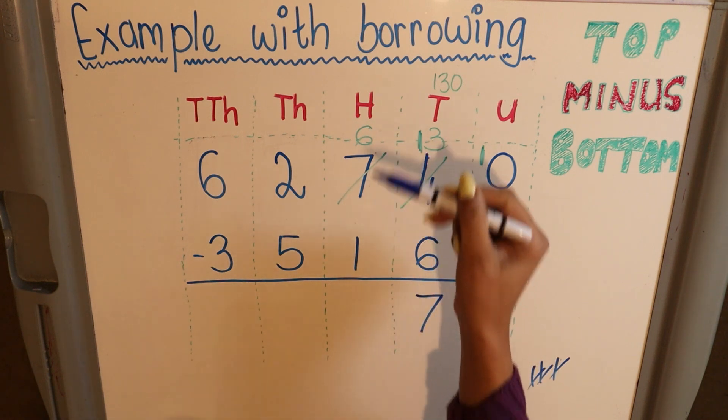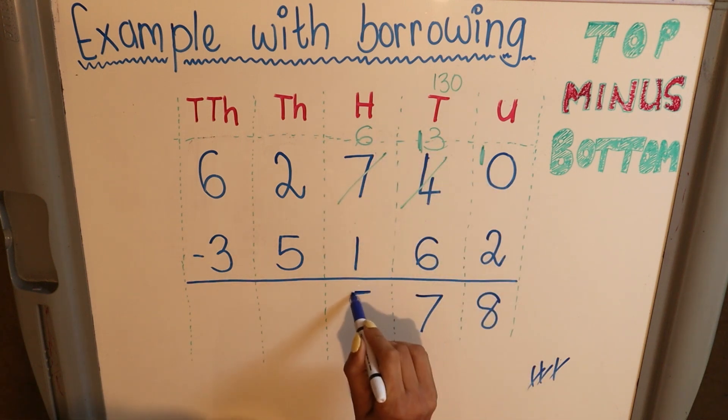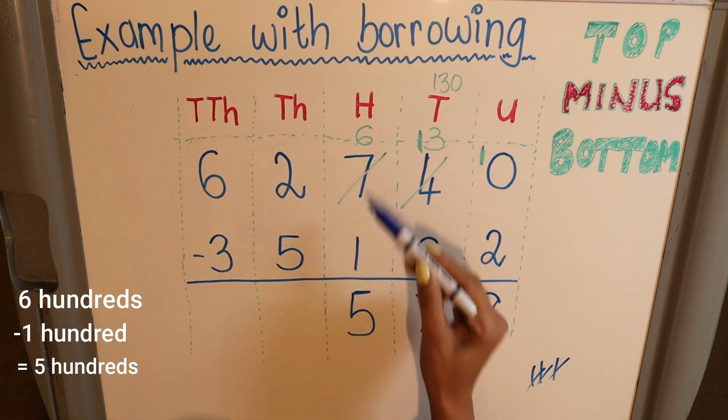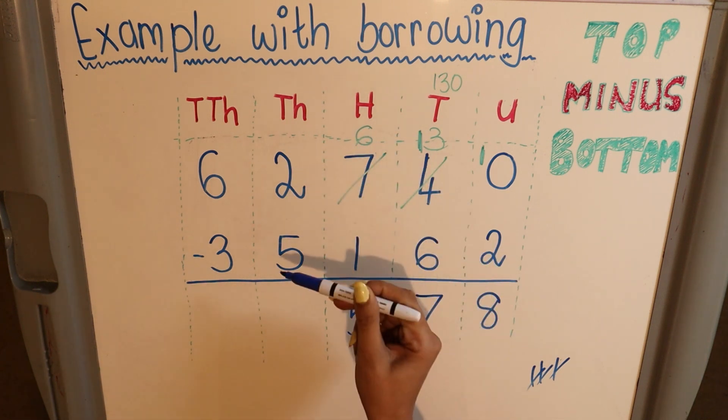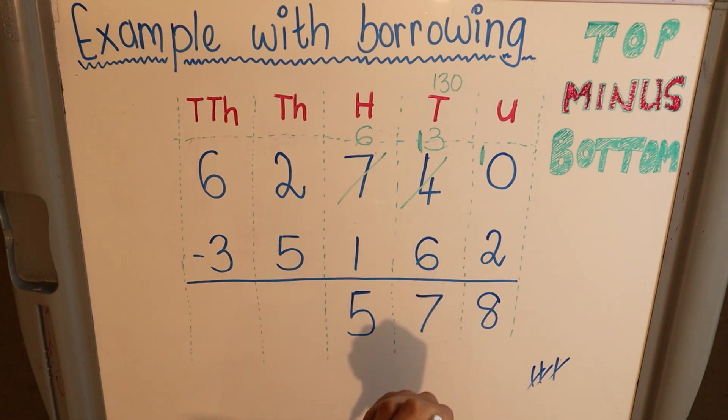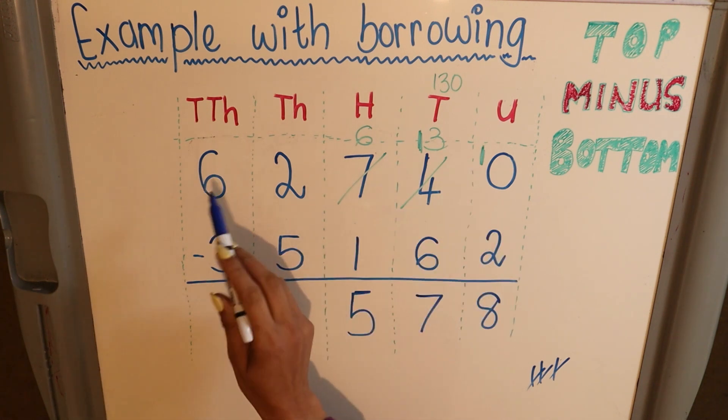Again, top minus bottom. 6 minus 1 is equal to 5. Just note that's 600 minus 100 equals 500. 2 minus 5—oops, I can't do that. I only have 2, I can't take away 5. So I borrow again from my 6.